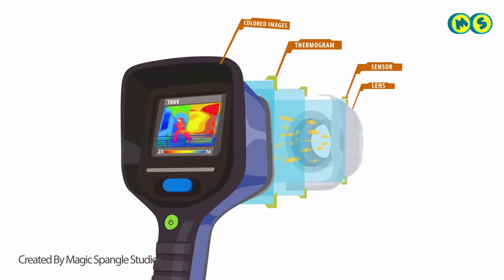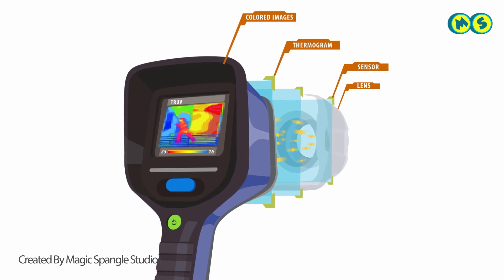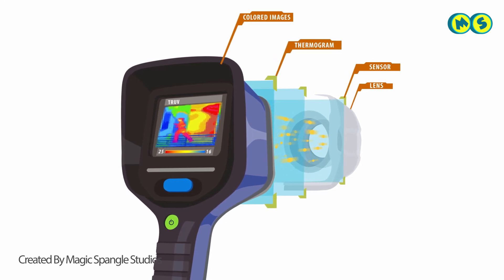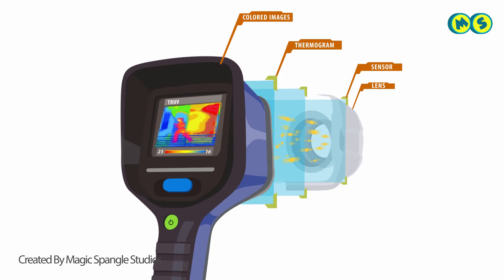The thermogram then transforms into electric impulses, which are directed to a signal processing unit that translates the information into data for the visual. The created image displays as various colors that correlate to the amount of infrared energy emitted.